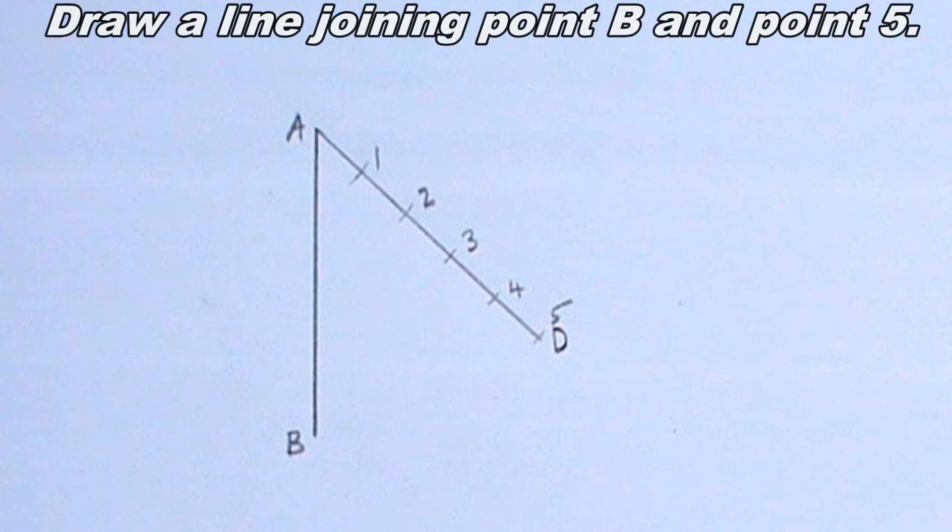I will draw a line from point 2 to intersect line AB. I will draw the line from point 2 because I want to divide line AB in the ratio of 2 is to 3.